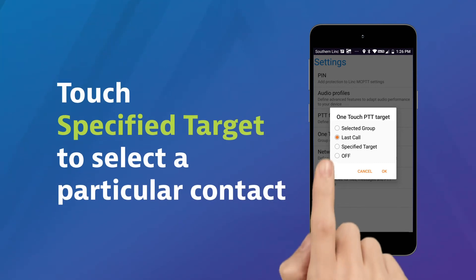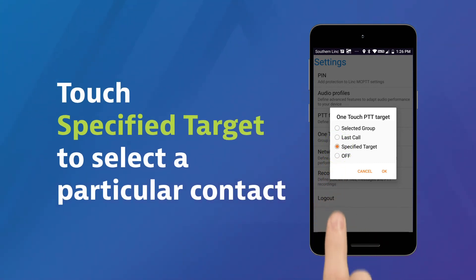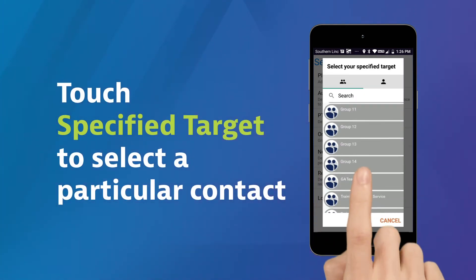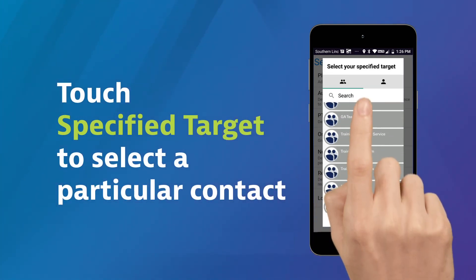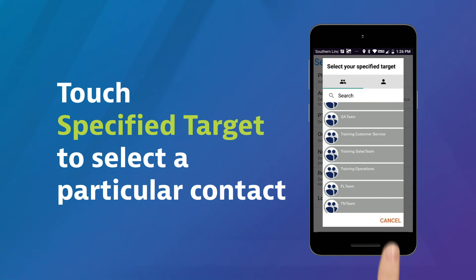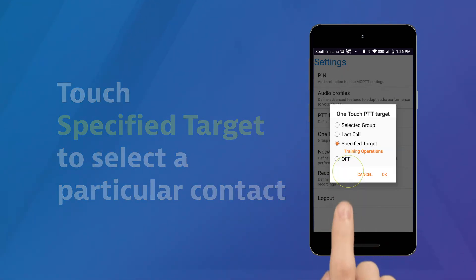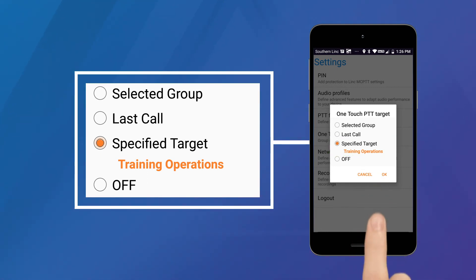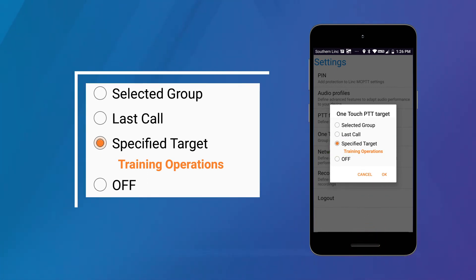Touch Specified Target to select a particular contact. Scroll through the list of contacts and touch your selection. Your selection will show on this screen. Touch OK to accept, or Cancel.